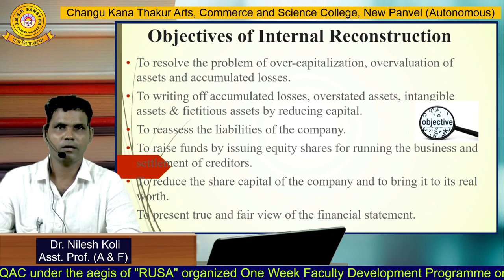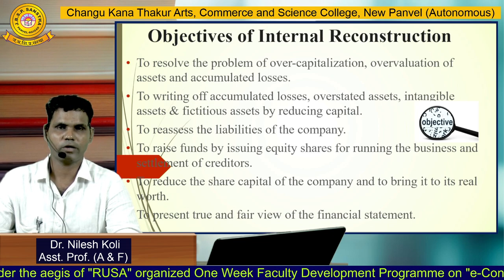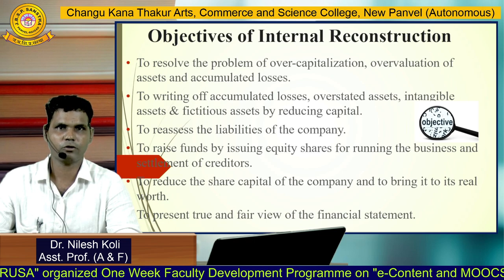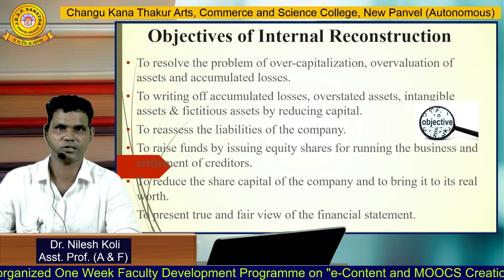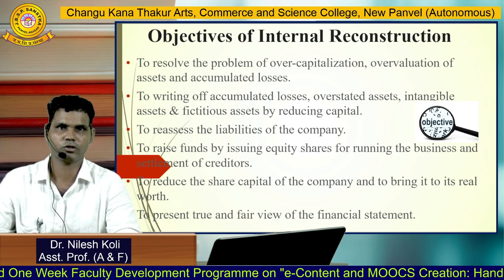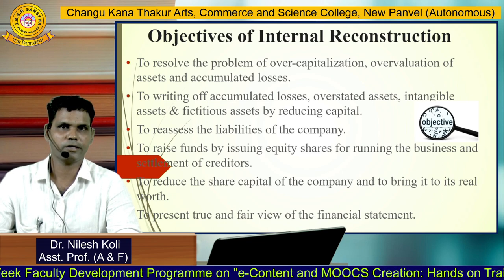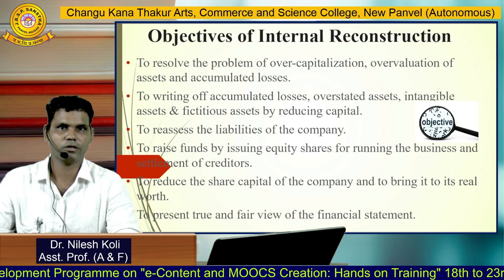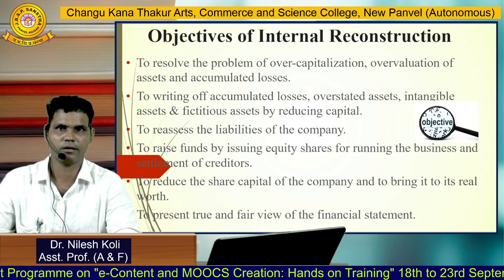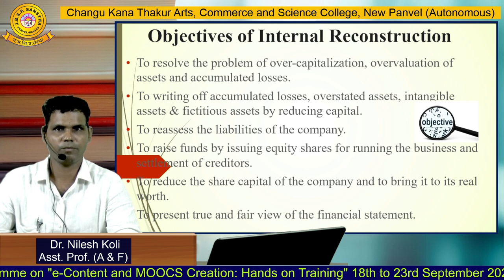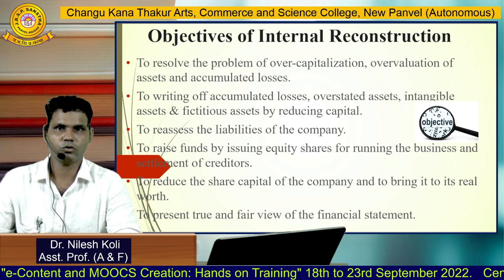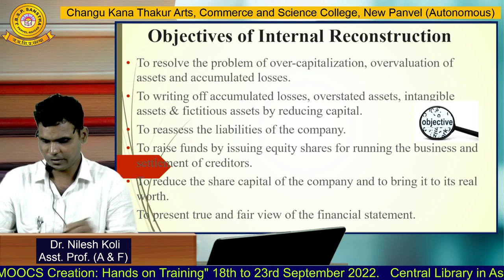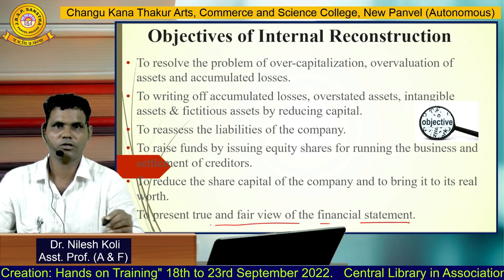Overstated assets — the assets have been overvalued and are adjusted or written off, including intangible assets and fictitious assets, by reducing the capital. It also reassesses the liabilities of the company. It raises funds by issuing equity shares for running the business and settlement of the creditors. It reduces the share capital of the company to bring its real net worth, and presents the true and fair view of the financial statement.